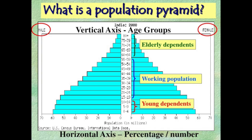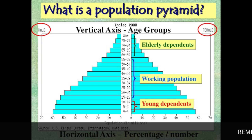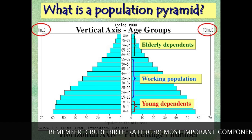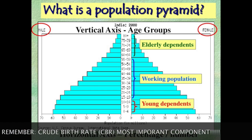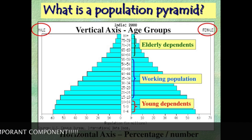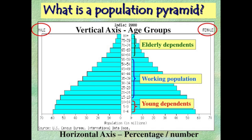The most important thing about a population pyramid is the crude birth rate — how many people are being born. Because it's not the death rate; we have to see if you're born first. So the birth rate is the most important thing.